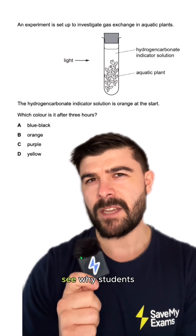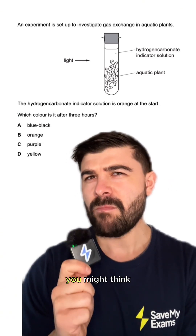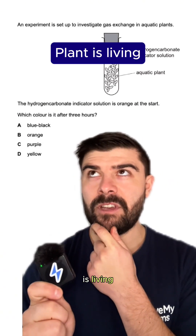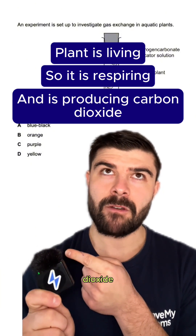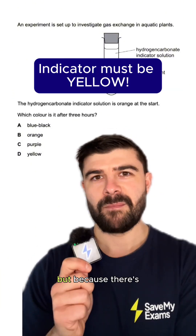It's easy to see why students got this wrong. You might think the plant is living, so it's respiring and producing carbon dioxide, so the indicator should go yellow.